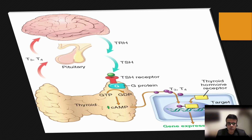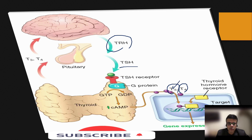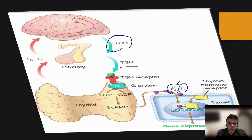Thyroid hormone synthesis starts with the action of TRH, or thyroid releasing hormone from the hypothalamus, which causes the release of TSH from the anterior pituitary. TSH, or thyroid stimulating hormone, in turn leads to the secretion of T3 and T4 from the thyroid gland. T3 is the metabolically active hormone, while T4 is the major form of circulating hormone. These two hormones get bound to thyroid binding globulin, and on entering target cells, the majority of T4 gets converted into T3, the metabolically active hormone.